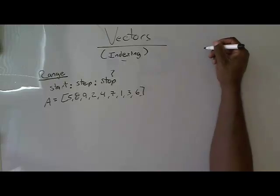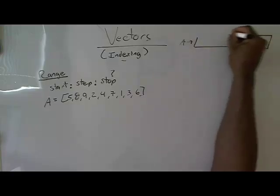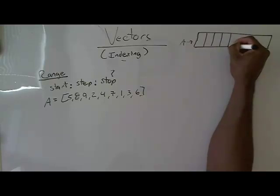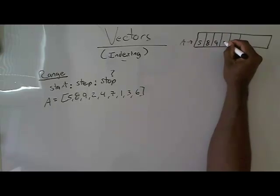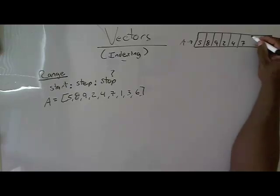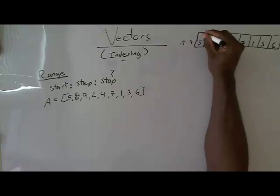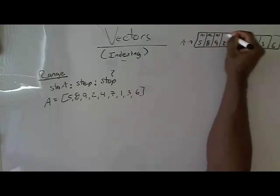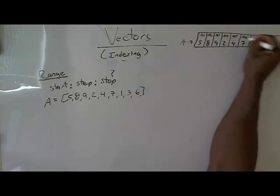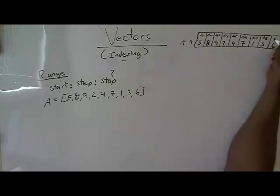And remember, once again, this is setting up memory locations. So A: five, eight, nine, two, four, seven, one, three, and six. And then this is memory location A one. This is A one, A two, A three, A four, A five, A six, A seven, and A eight. Excuse me, and A nine.